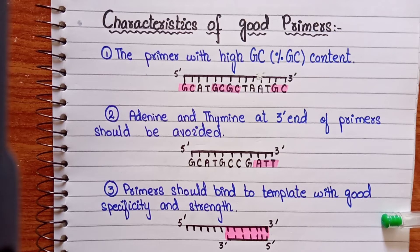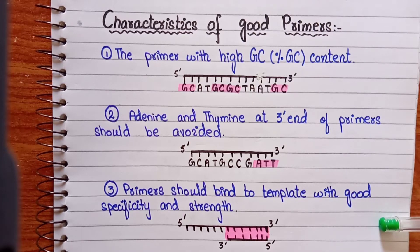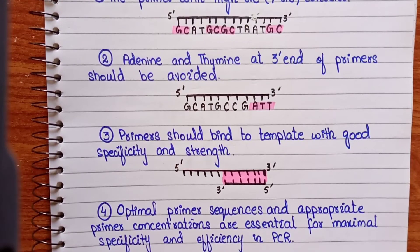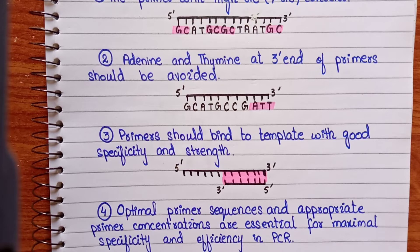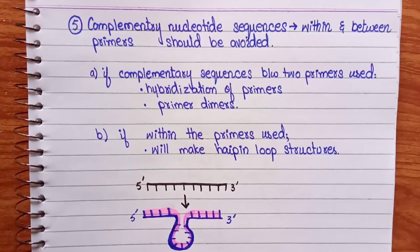Third, primers should bind to the template with good specificity and strength, because this helps in DNA synthesis. Additionally, optimal primer sequences and appropriate primer concentration will increase the efficiency of PCR.